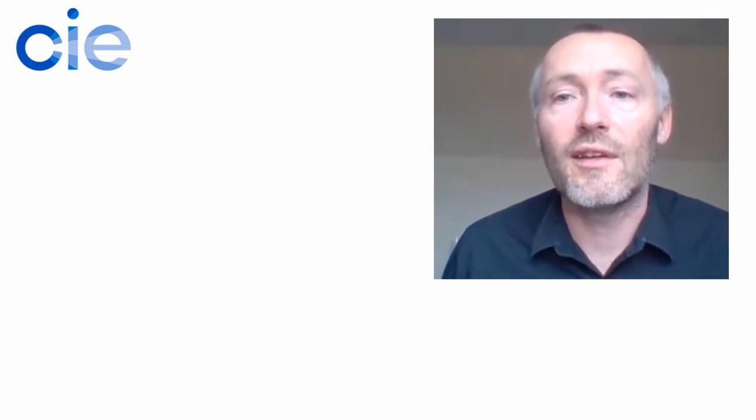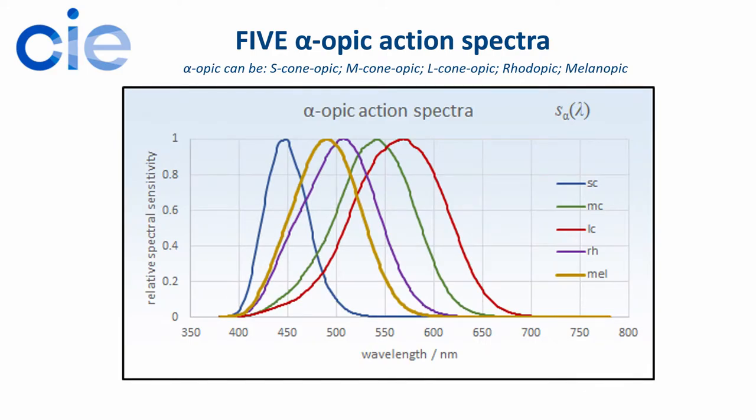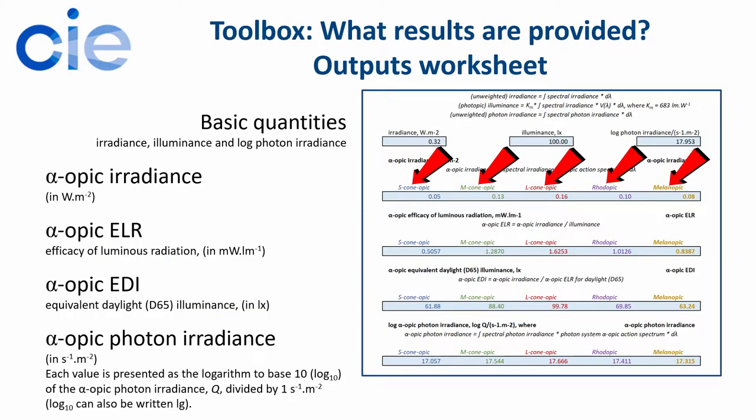Now, because lighting professionals and photobiologists are interested in this topic, the toolbox also provides conversions between the different systems that people use for presenting the light quantities. So the standard that Luke just talked about introduced five action spectra related to non-visual responses to light, one for each of the five human photoreceptor types. And these can be used to calculate five alpha-opic quantities, but in three different systems.